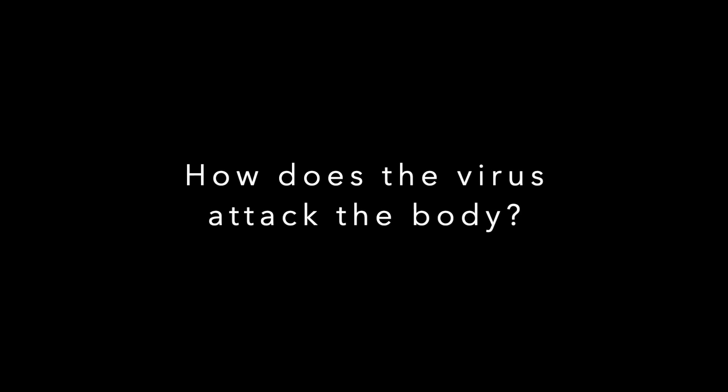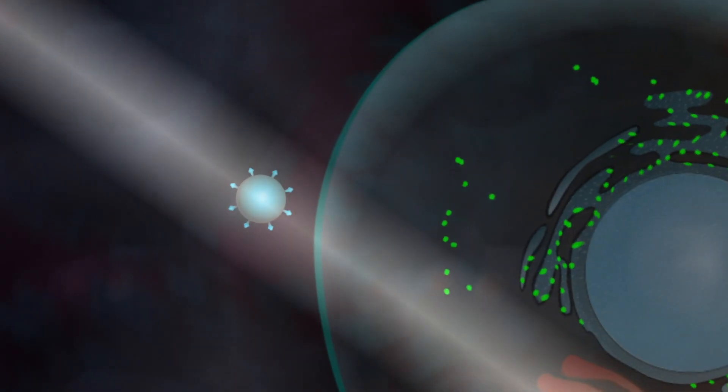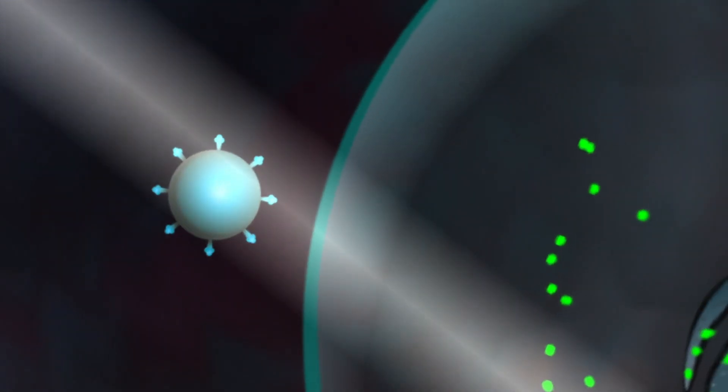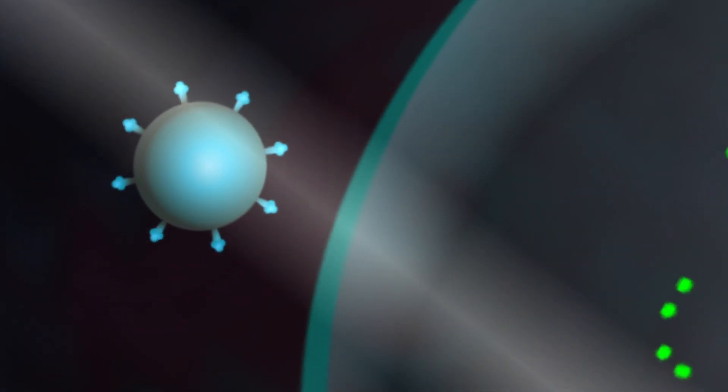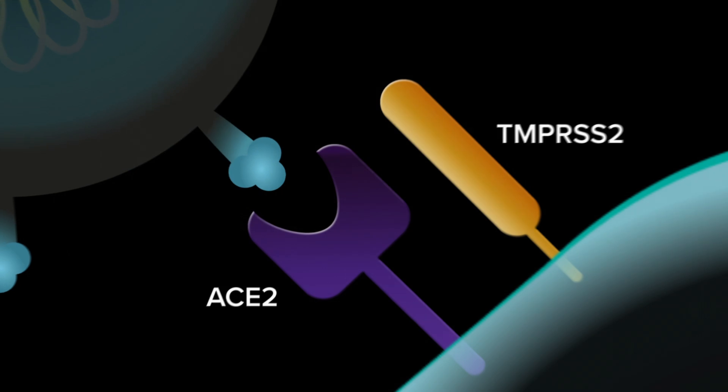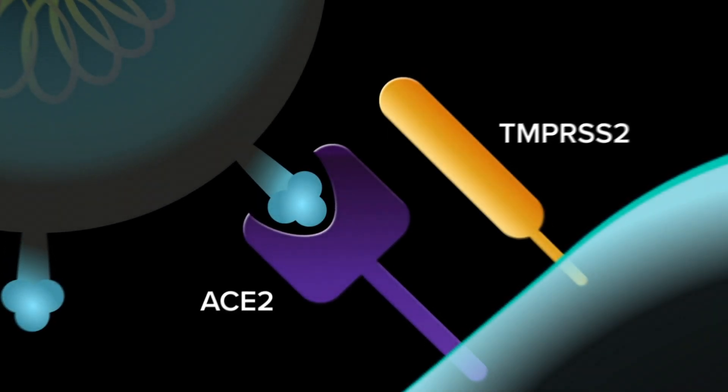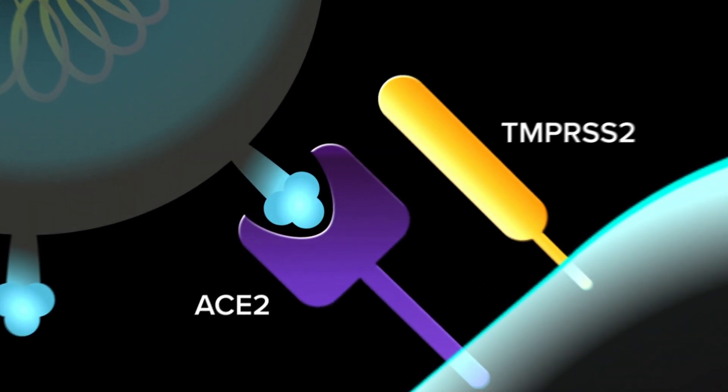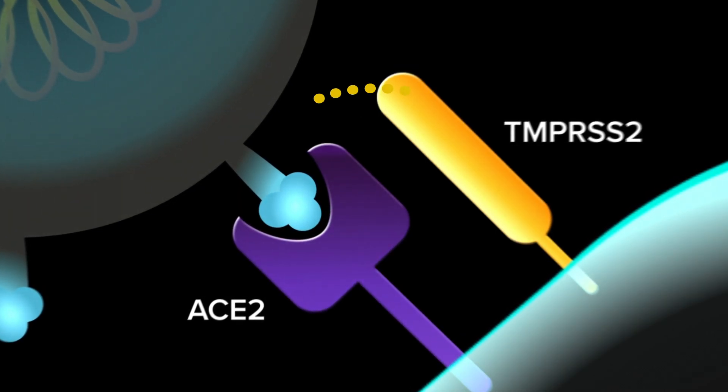How does the virus attack the body? Once inside your body, the virus comes into contact with cells in your throat and lungs. A spike glycoprotein on the virus binds to the ACE2 receptor, a protein attached to the outer surface of the membrane of some of your cells.